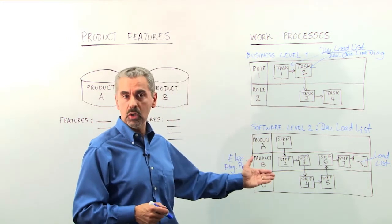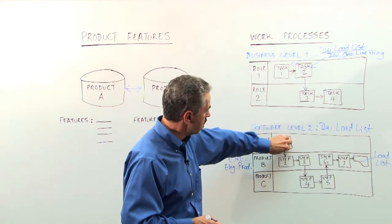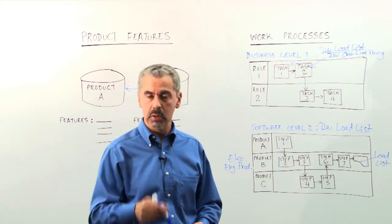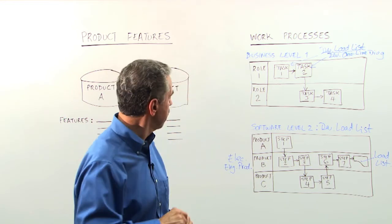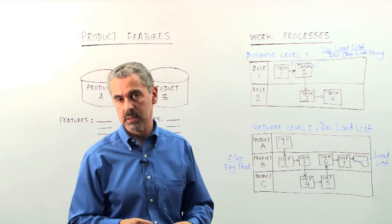Now you could even go one step further and create a level three diagram where now you can detail each step and describe push button, step by step, how to operate the software. But these are the first two levels when we take a look at work processes.